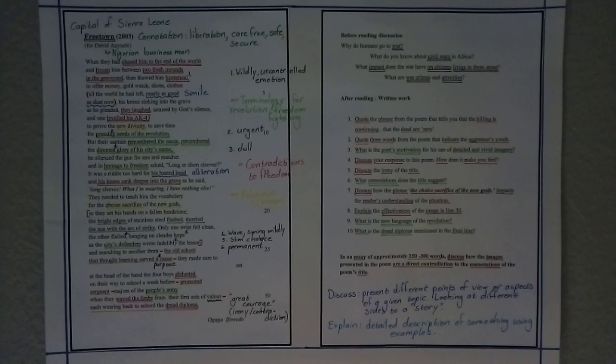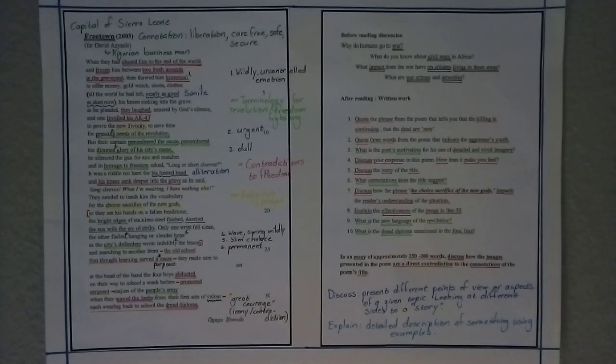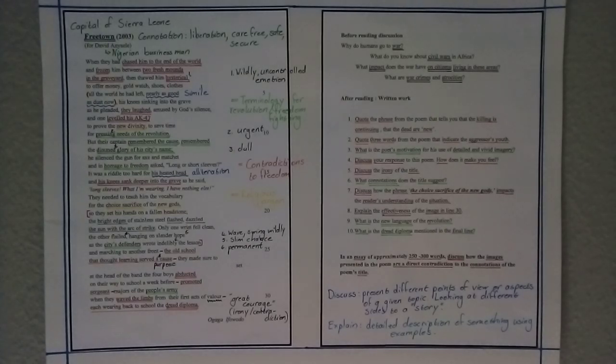If you look at the right-hand side, it says, before reading discussion, why do humans go to war, what do you know about civil wars in Africa, and what impact does war have on citizens living in these areas, and what are war crimes and atrocities? So very often, civil wars have something to do with a revolution. Maybe the present government is oppressive and committing crimes against its people, and a group of people decide to stand up against them.